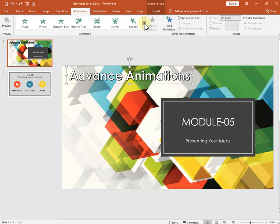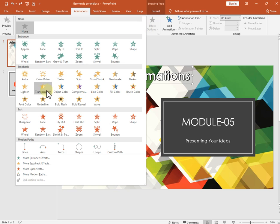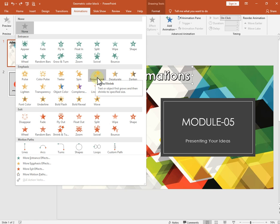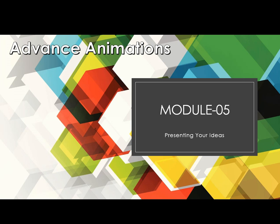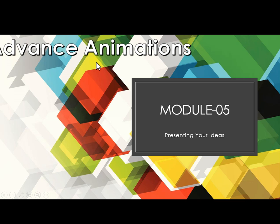Now let's look at emphasis effects. Emphasis means the object is already visible on the slide. We have a lot of options — I will select 'Grow and Shrink.' The object which is already shown in your presentation will animate like that whenever you click on it.